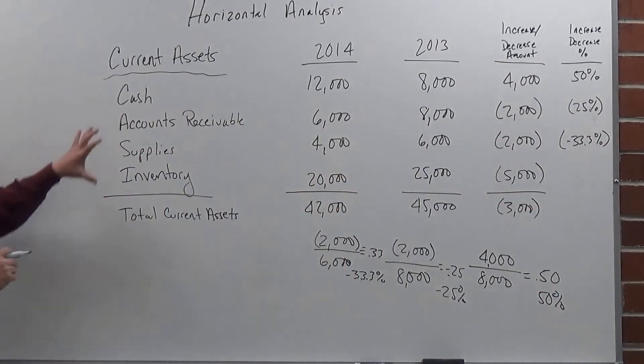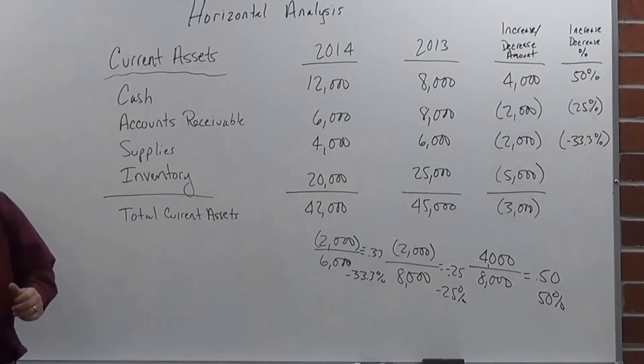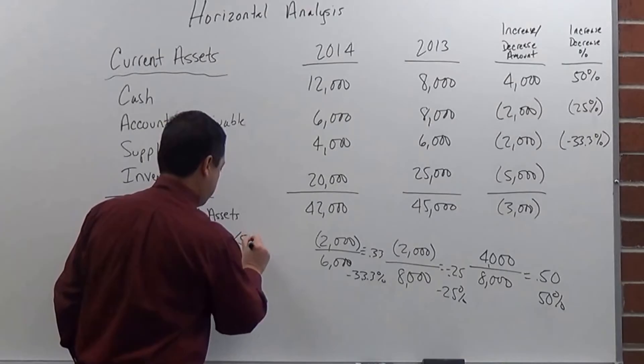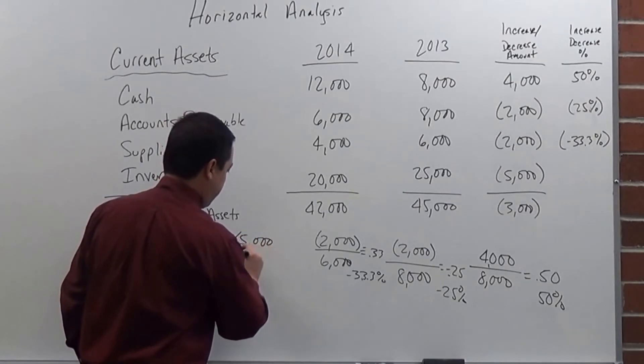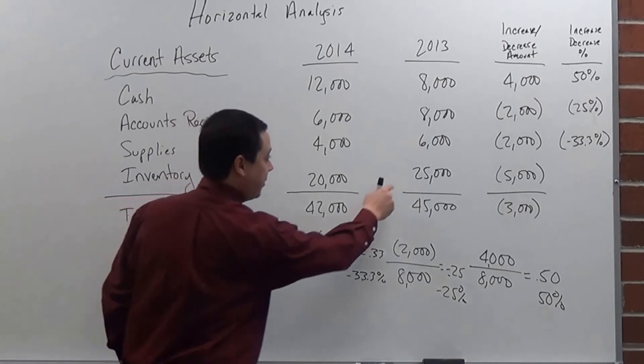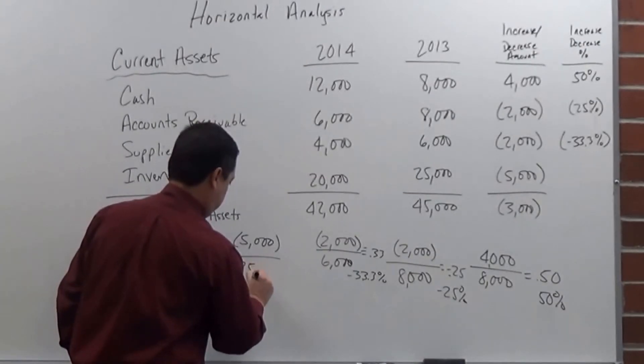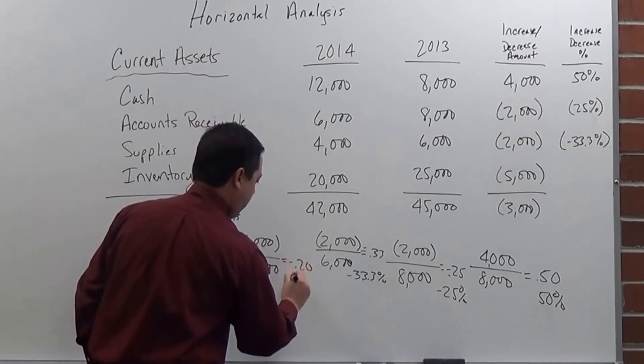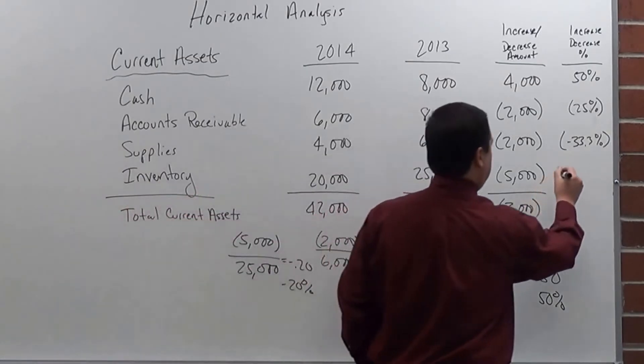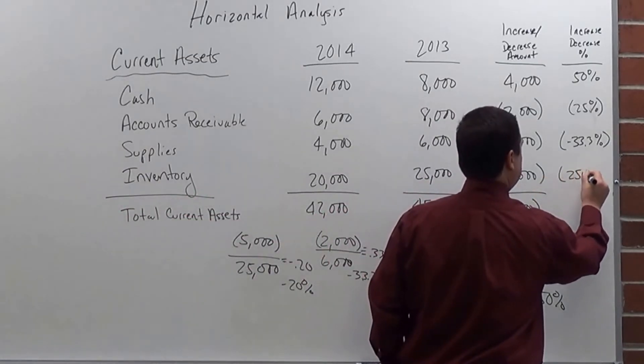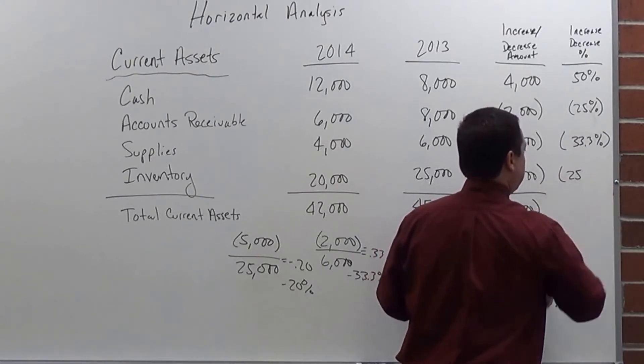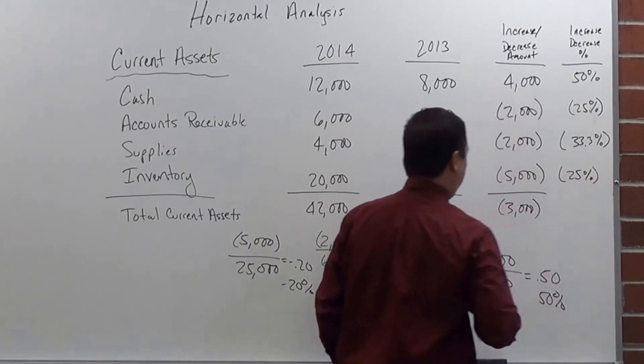And then finally, in my inventory here, the last one of the accounts, and I will also do the total of current assets, but I have $5,000, and that is over the $25,000 base year. And that gives me a total of .20 negative, which is negative 20%. So I will have a negative 20%. I don't need to put that in there since that's already a negative. I'm going to put the percentage here.